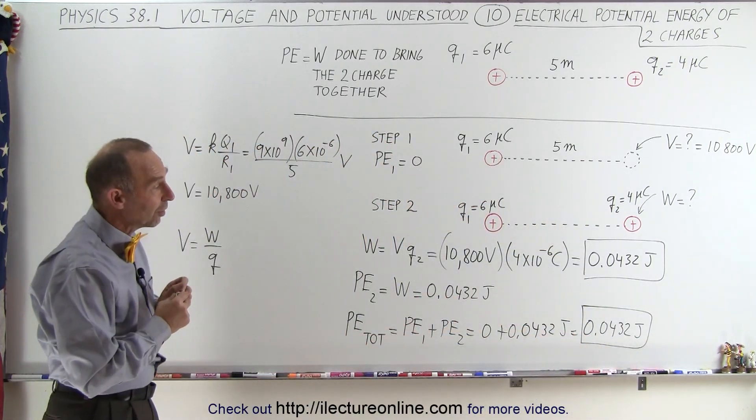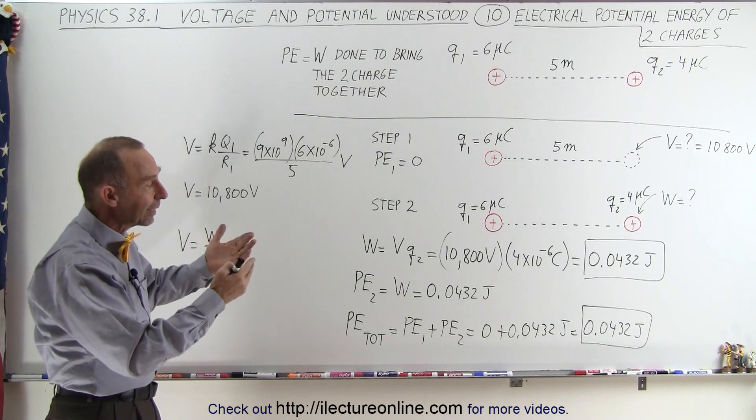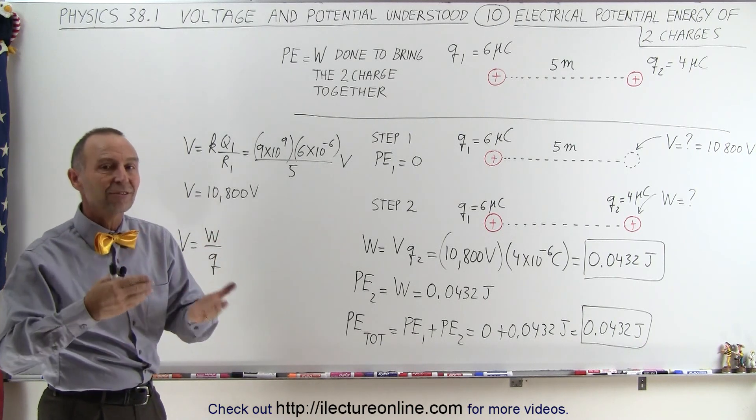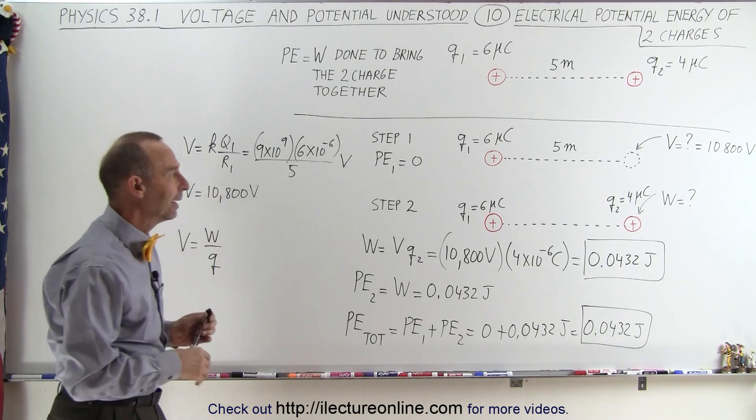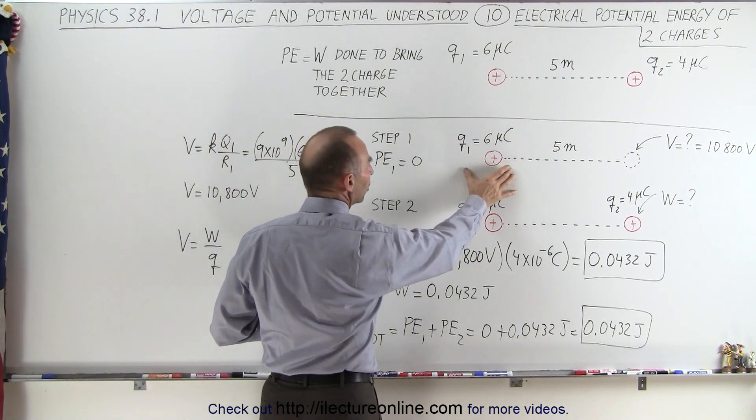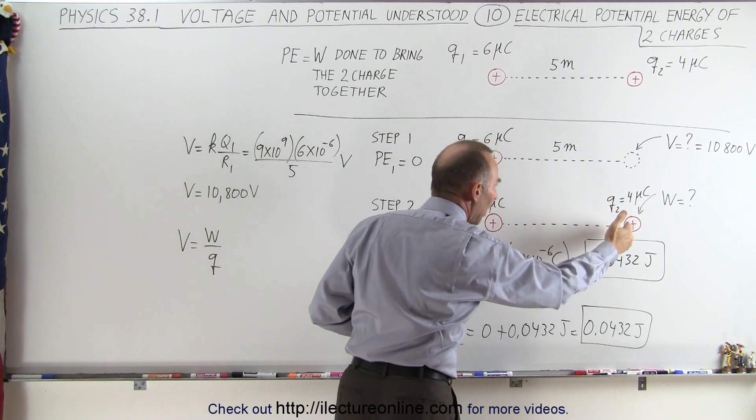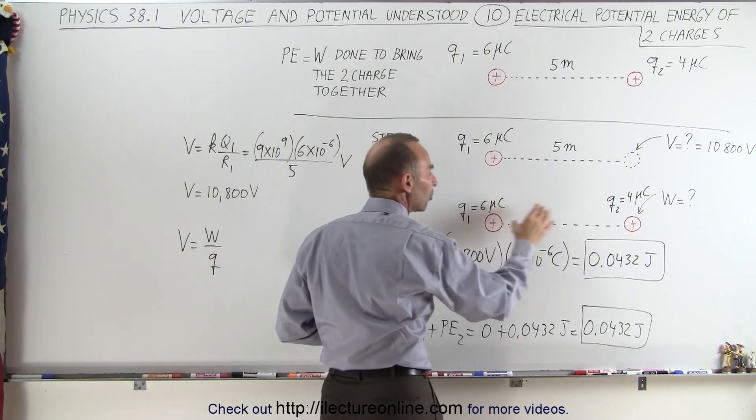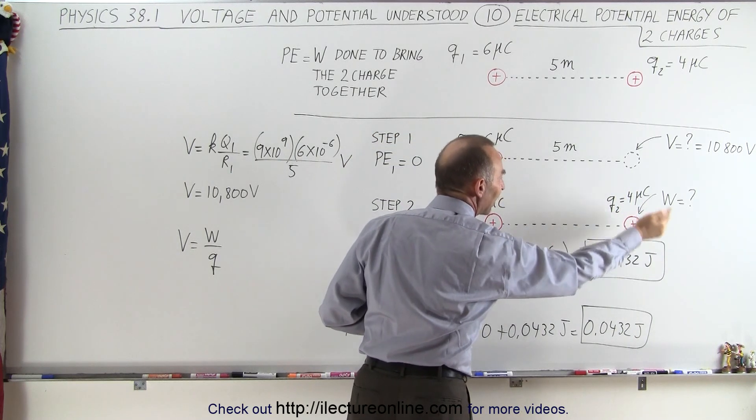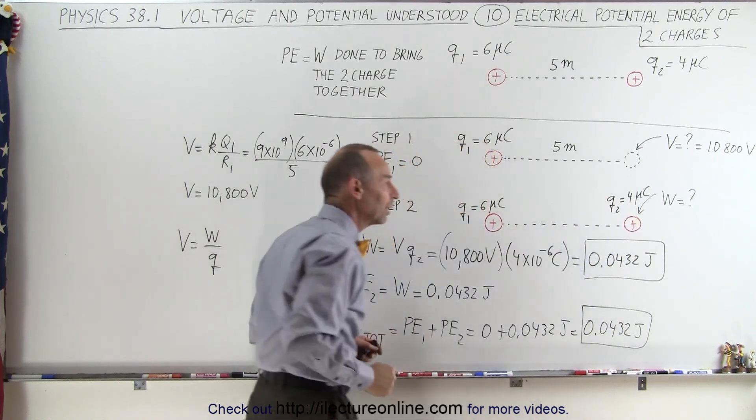to see how we typically calculate the potential of a system of charges placed close together. It takes no energy, no work at all to put the first charge there, but to put the second charge there, now it's going to be the product of the voltage created there by the first charge times the charge of the second charge put in that location.